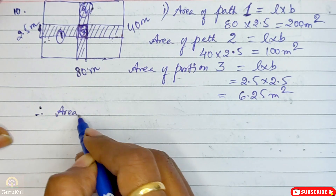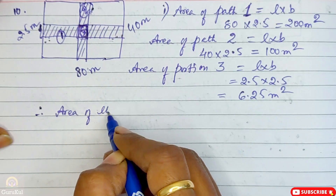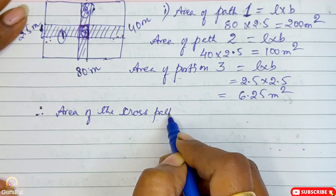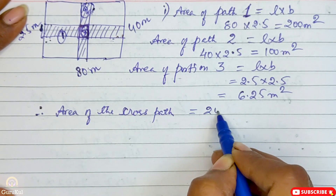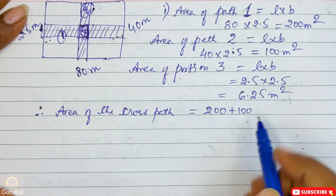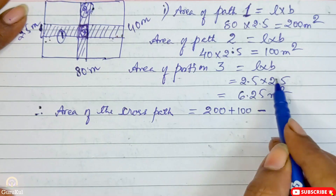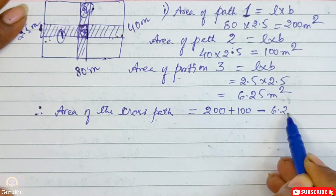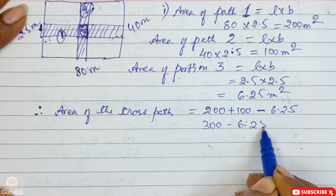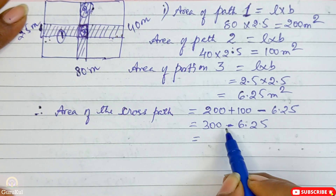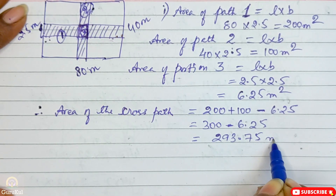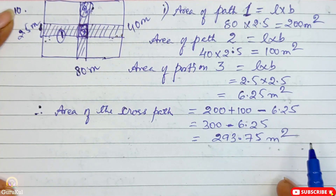Therefore, area of the cross path = 200 + 100, minus the overlapping intersection area of 6.25, which gives us 300 - 6.25 = 293.75 meter square. So part 1 is complete.